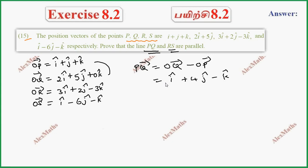This is RS vector. RS vector equals OS minus OR. Now, for OS minus OR subtraction, we get 2I minus 8J.